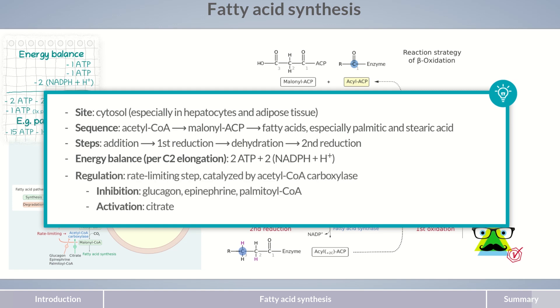The rate-limiting step of fatty acid synthesis is the conversion of acetyl-CoA to malonyl-CoA by acetyl-CoA carboxylase. It can be inhibited by glucagon, epinephrine, and palmitoyl-CoA and activated by citrate.